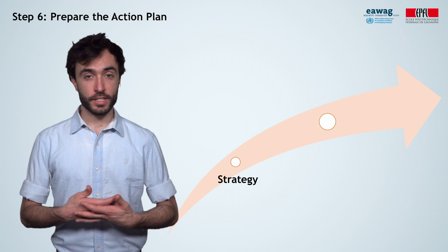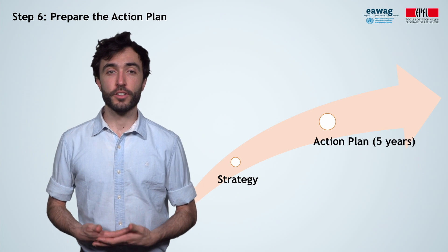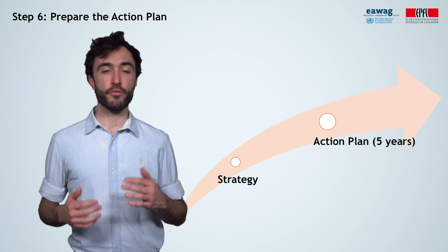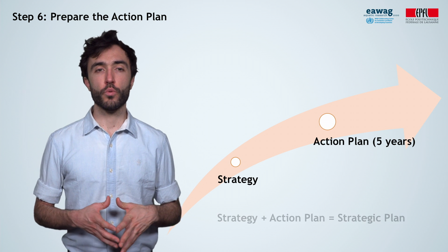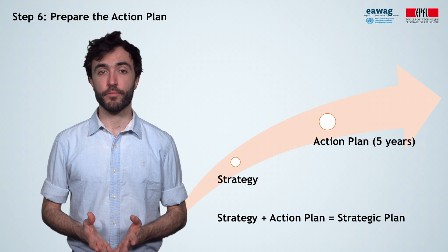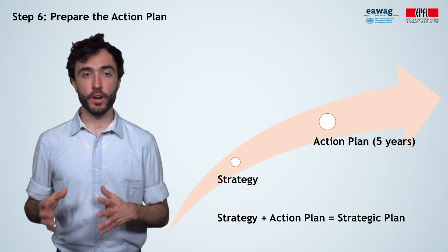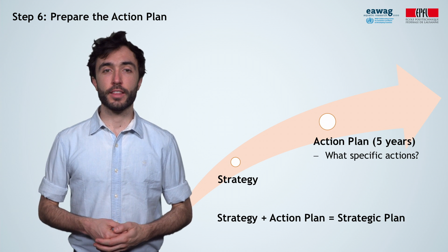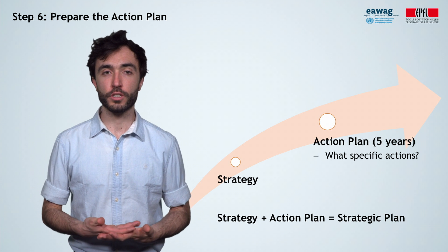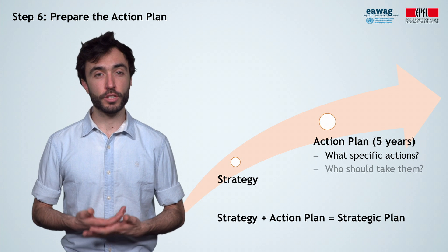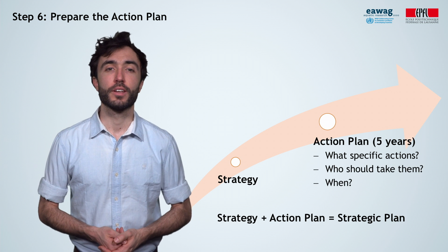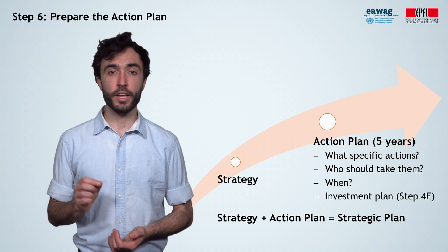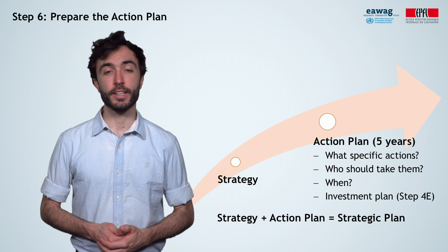Based on the strategy, in step 6 you will develop the action plan to turn the strategy into practical reality. The action plan normally has a time span of 5 years. Together, both documents will comprise the overall strategic plan. The action plan should provide answers to: What are the specific, detailed actions that need to be taken to implement the individual components of the overall strategy? Who should take them and when? It should also include an investment plan — check step 4e in the guide for a full review of financial planning.